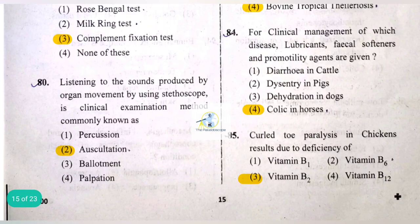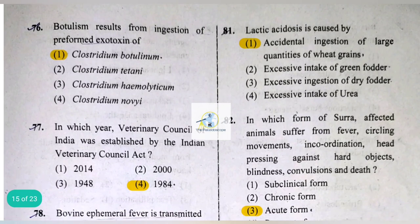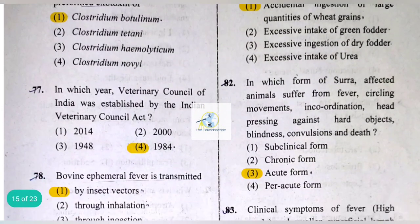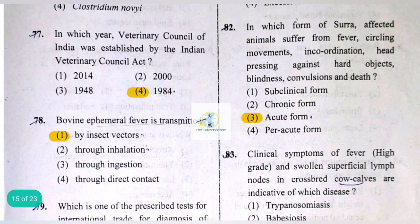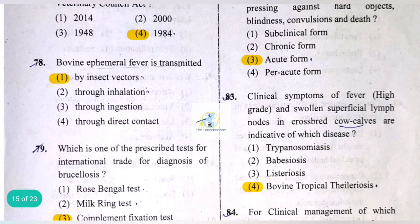Lactic acidosis is caused by accidental ingestion of large quantities of wheat grains. In the acute form, affected animals suffer from fever, circling movements, incoordination, head pressing against hard objects, blindness, convulsions, and death.